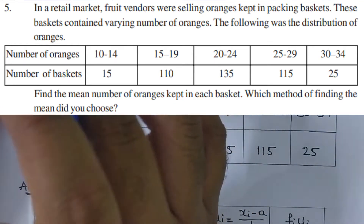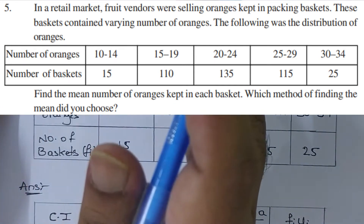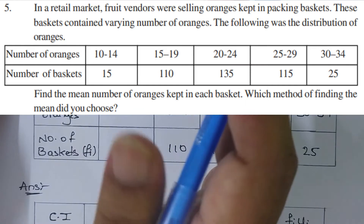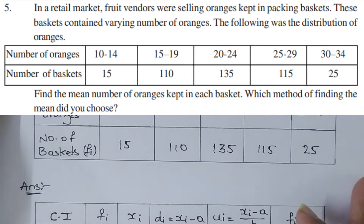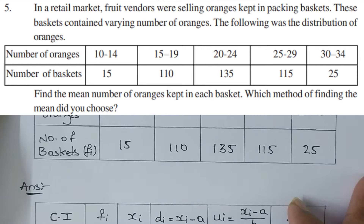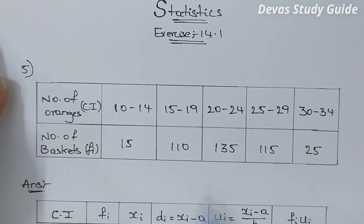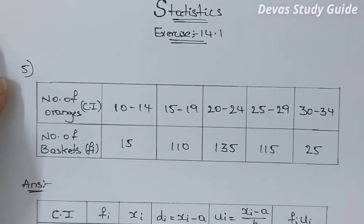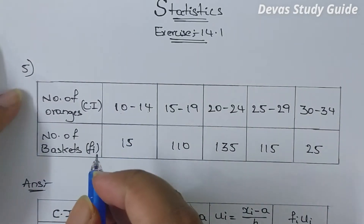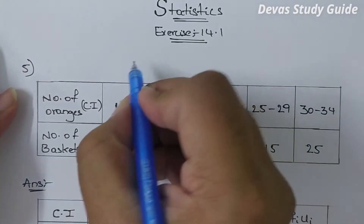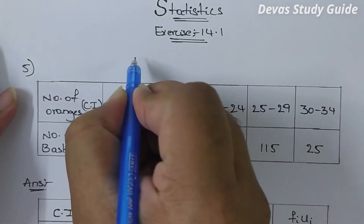Which method of finding the mean do you choose? If you choose the mean method, you can choose. First, let's look at the step deviation method. Let's take a look at the previous one — that's why we put the previous one.